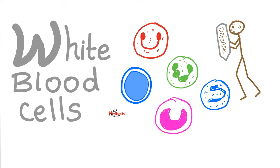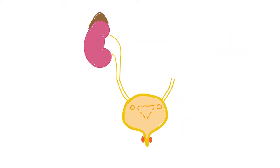What is the function of white blood cells? They are your military, your army, your defense system against pathogens. Let's review the anatomy of the urinary system: urethra, then the urinary bladder, then the ureter, then the kidney.